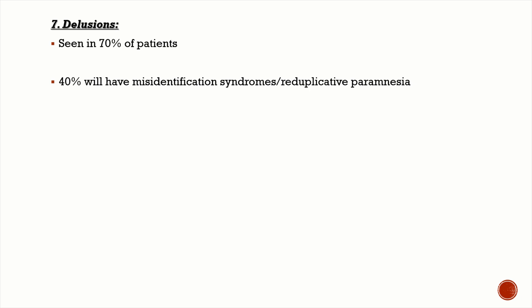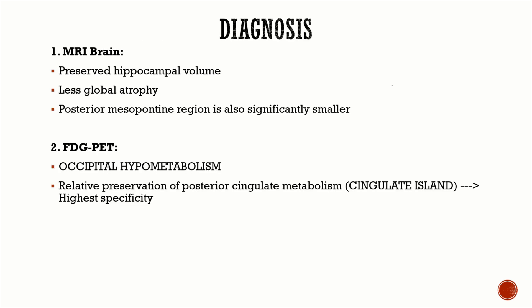Delusions are very common in Lewy body dementia — seen in 70% of patients — and usually these delusions are misidentification syndromes or reduplicative paramnesia.